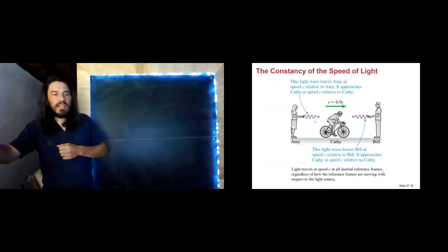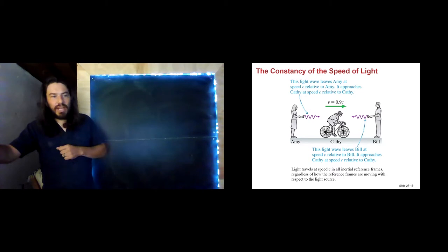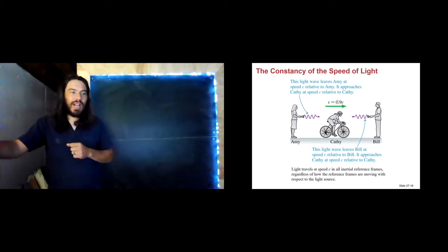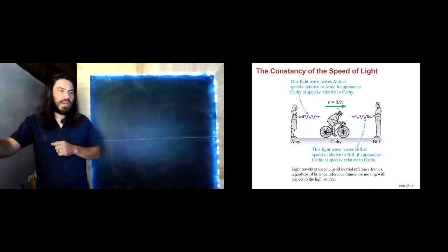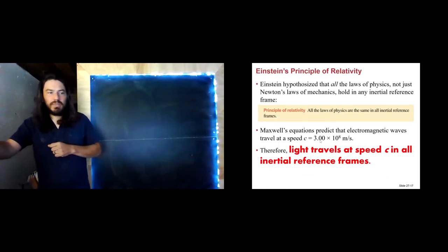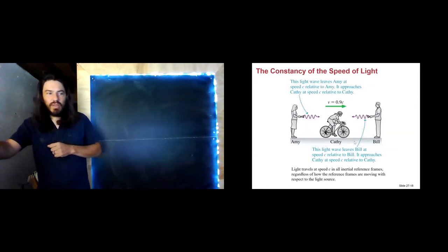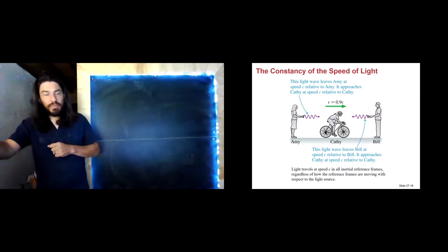Here we see a thought experiment. We've got Amy, Kathy, and Bill. Kathy is riding her bike — she can now ride at 90% of the speed of light. We're going to see this notation quite a bit in this chapter: 0.9C, where C is the speed of light.